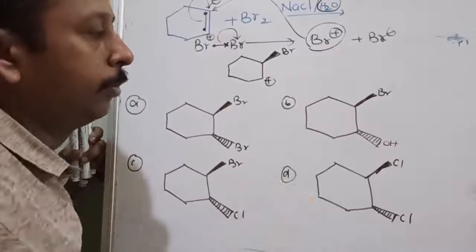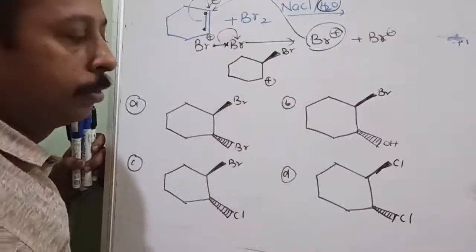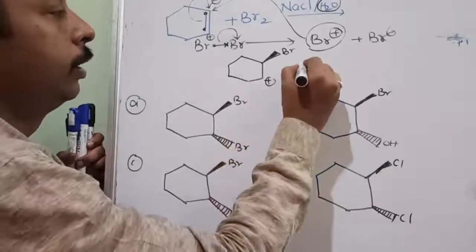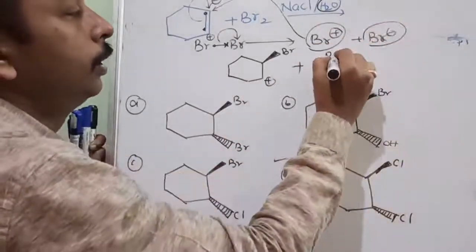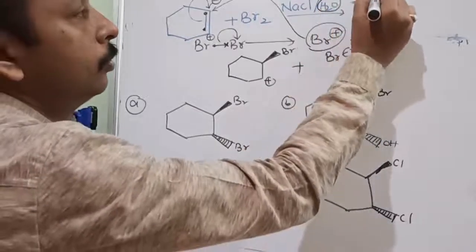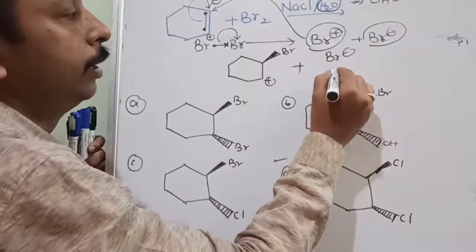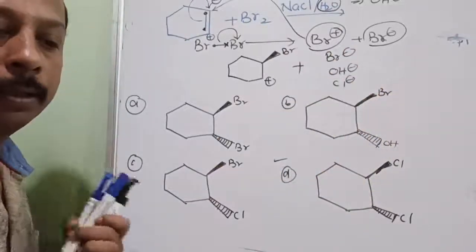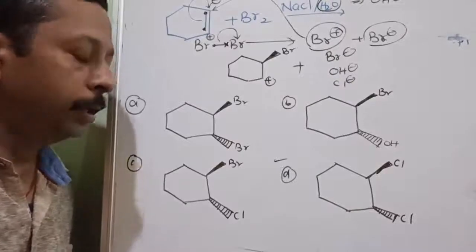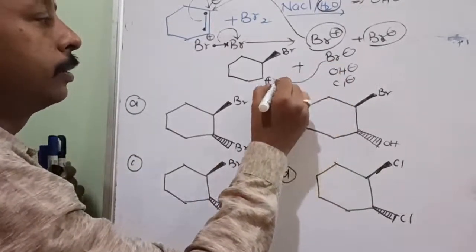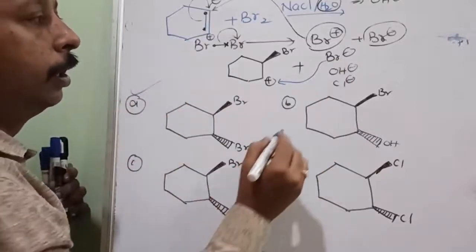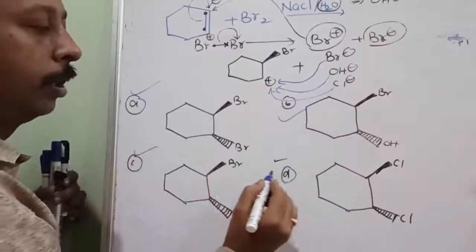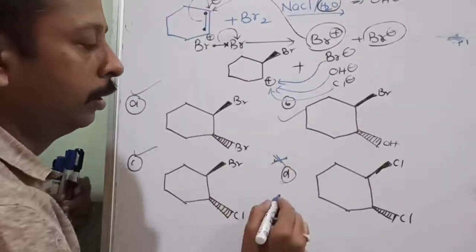That means this particular product may not be possible. So first, how does it take place — is it understood? So the answer is D. But further I will tell you every piece of information. Now, nucleophiles: who are they? Bromine minus. And here water is also there — water will contain OH⁻. And NaCl contains Cl⁻. Three nucleophiles are there in the reaction. Suppose if bromine gets attached — this is possible. If OH⁻ attaches — this is possible. If Cl⁻ attaches — this is possible. But option D is nowhere possible. That's why the answer is D.